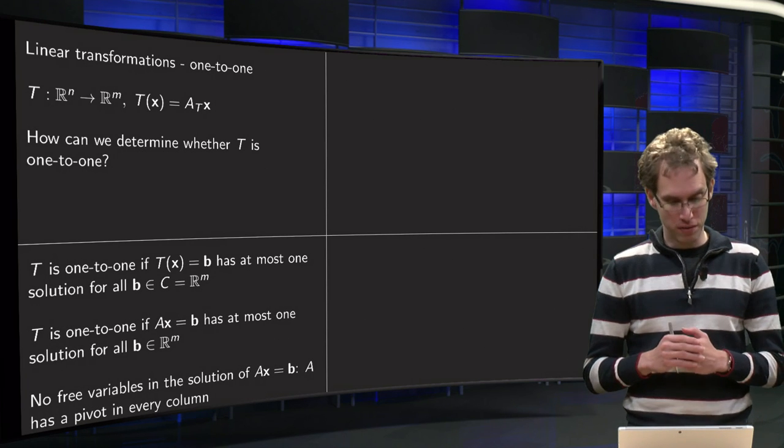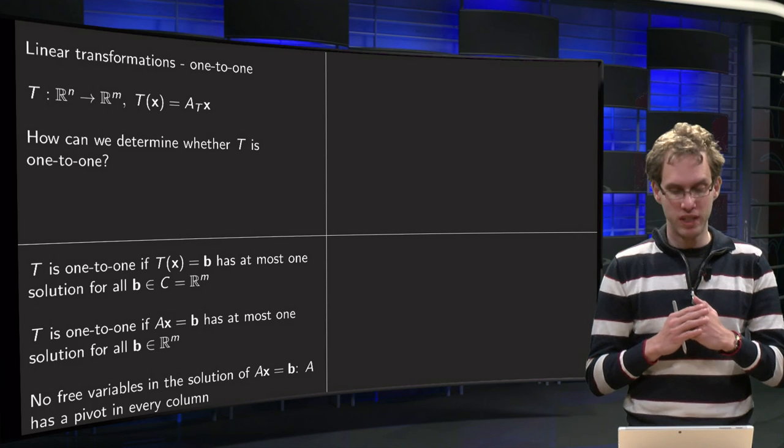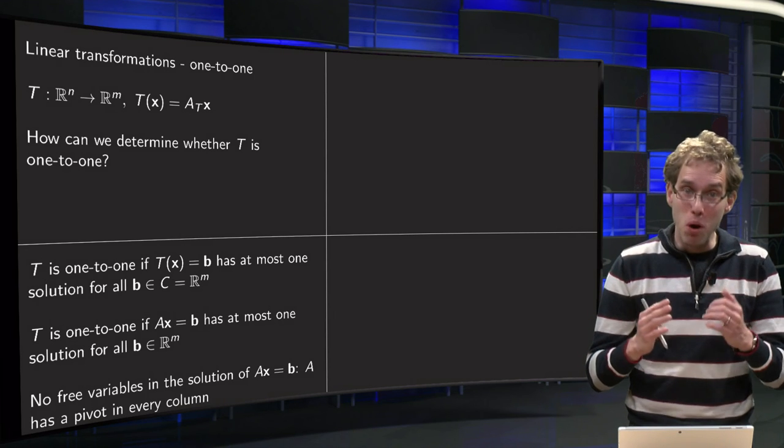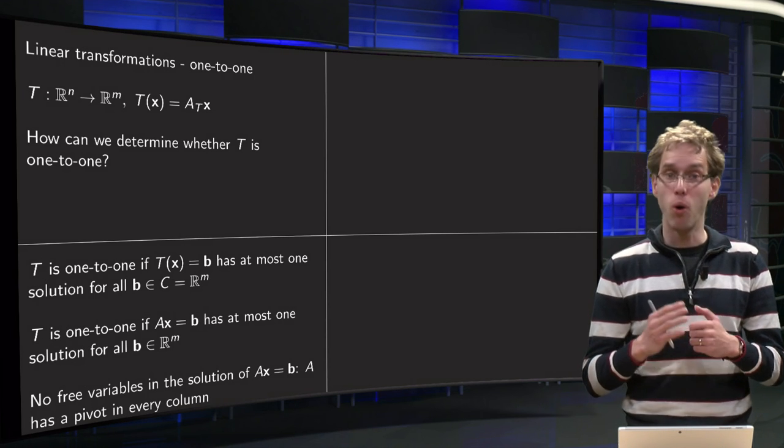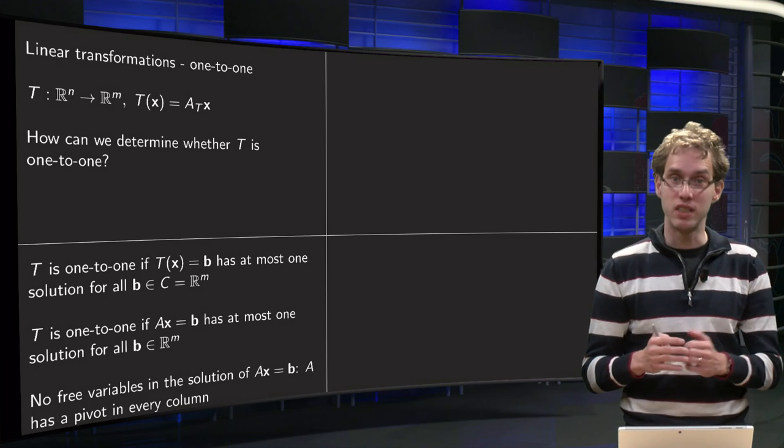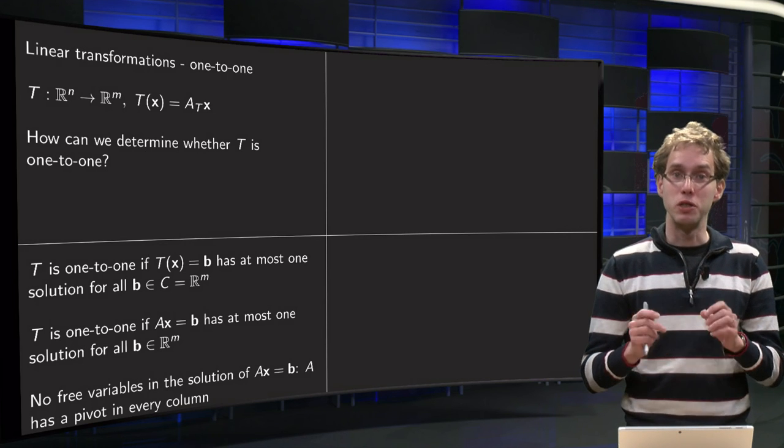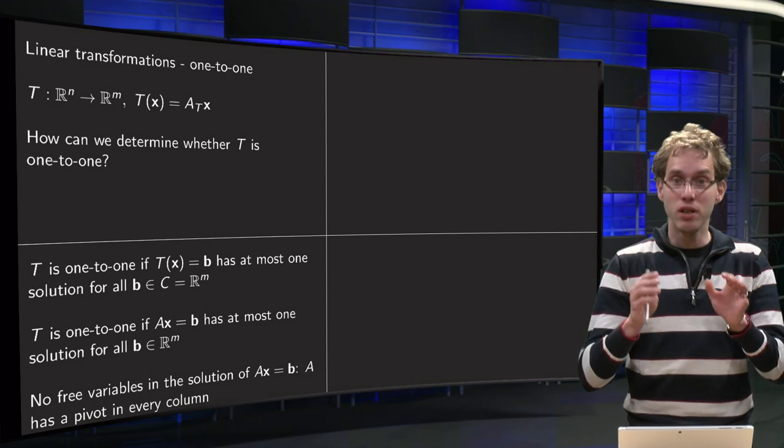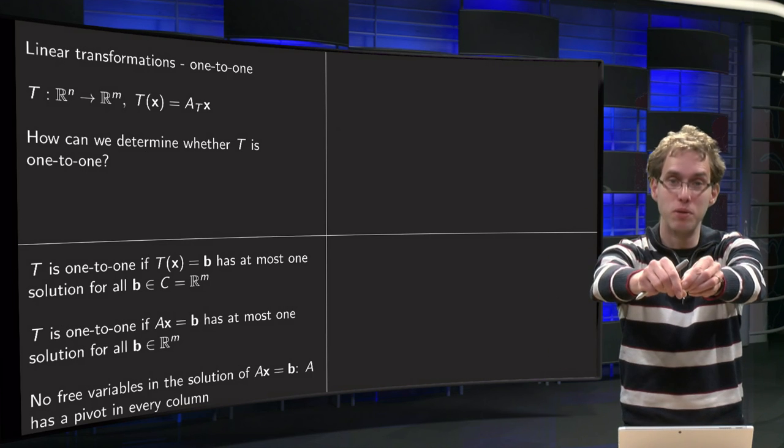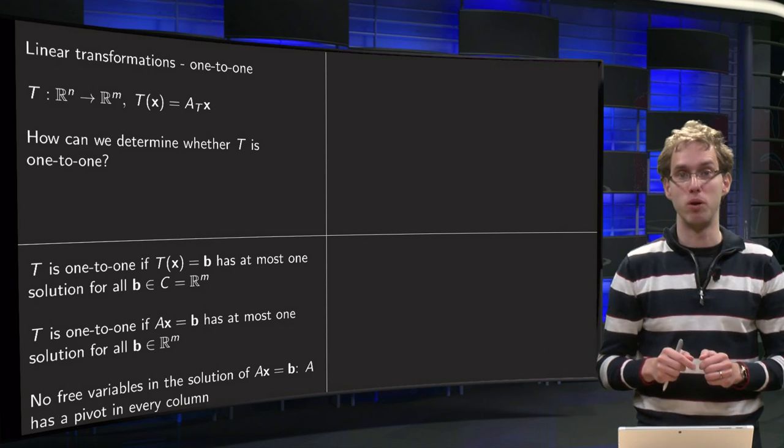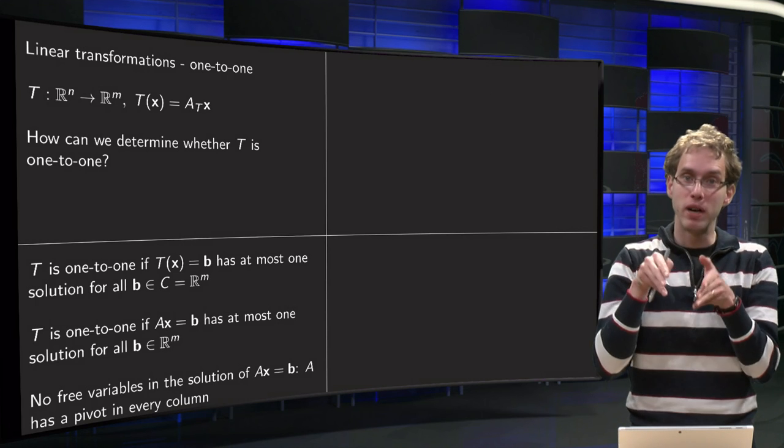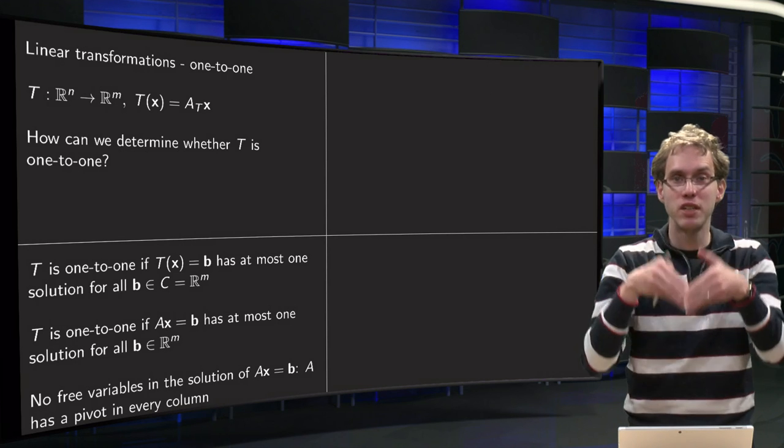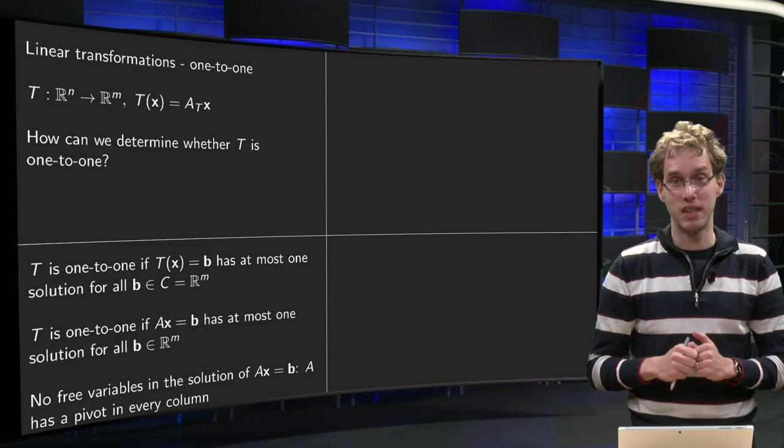Well, use the definition. T is 1 to 1 if T(x) = b has at most one solution for all b in Rm. So 1 to 1 means that it is not allowed to have more x's in the domain mapping to the same b in the codomain, so for any b in the codomain you can have at most 1 x which is mapped to that particular b.